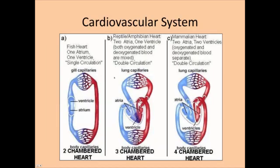In the middle here we have our reptile heart. It's still three chambers like the amphibian was, but we have a little bit more with the reptile. There is a little flap here that's going to reduce the mixing of oxygenated and deoxygenated blood. But as you can see, we still have some mixing in that one ventricle for the reptile heart. So we're still not perfect, but we're getting there.